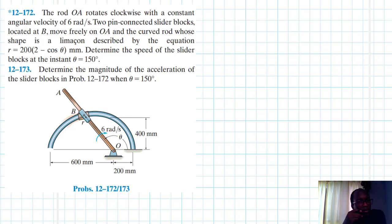Hello, I welcome you home. The problem reads, the road OA rotates clockwise with a constant angular velocity of 6 rad/s. The two pin-connected slider blocks located at B move freely on OA and the curved road whose shape is a limaçon described by the equation r = 200(2 - cos θ) mm. Determine the speed of the slider blocks at the instant θ = 150°. And in the follow-up problem, determine the magnitude of the acceleration of the slider blocks. This problem is coming from Engineering Mechanics and Dynamics, 14th edition by R.C. Hibbeler. So let's quickly go to the first case, which is 12-172.